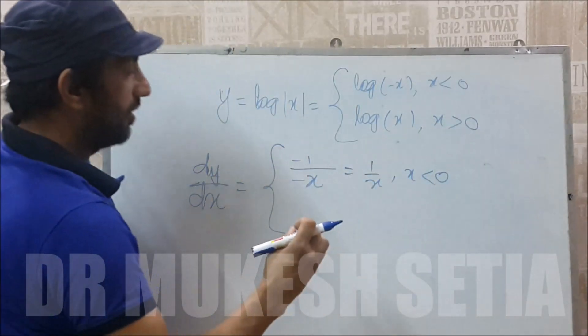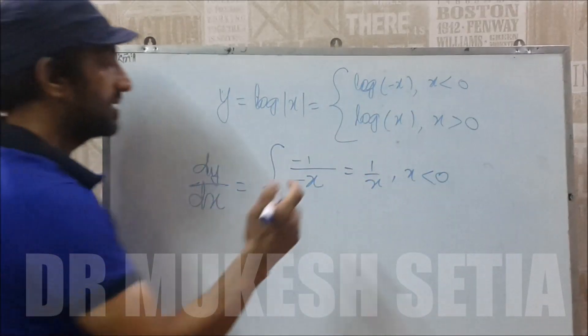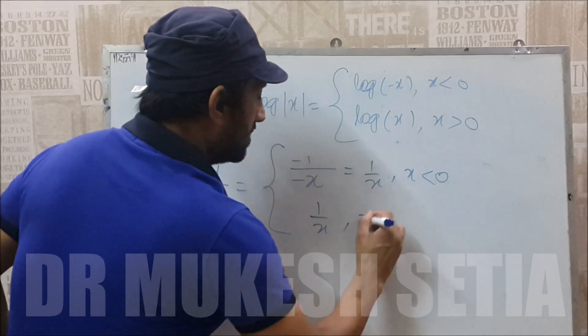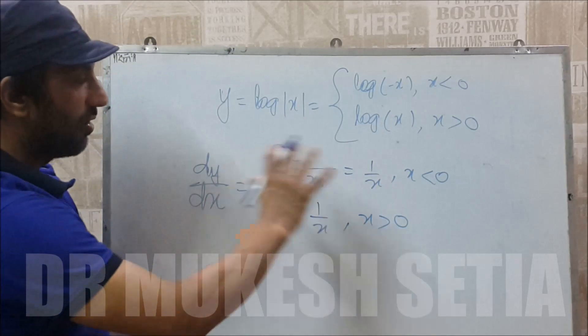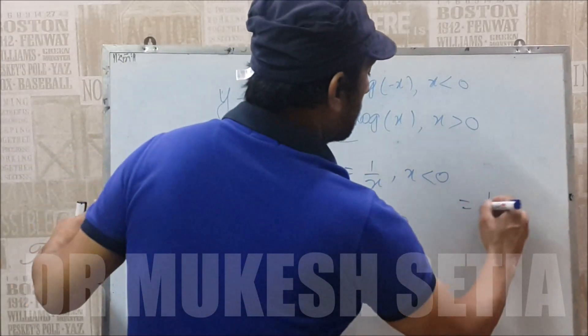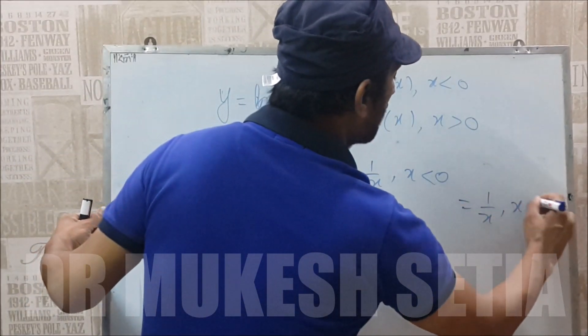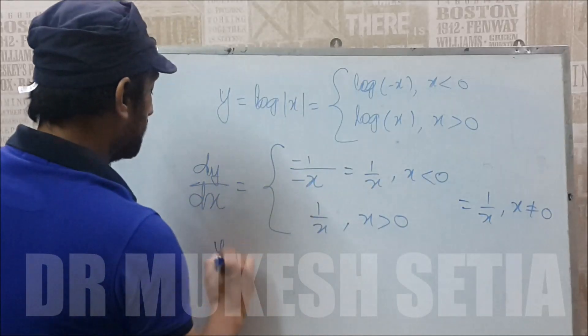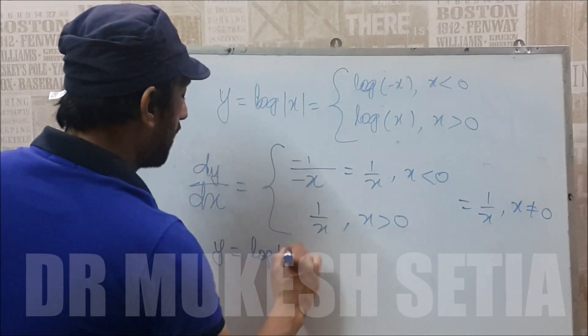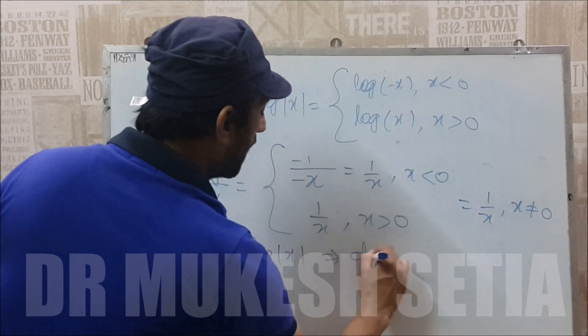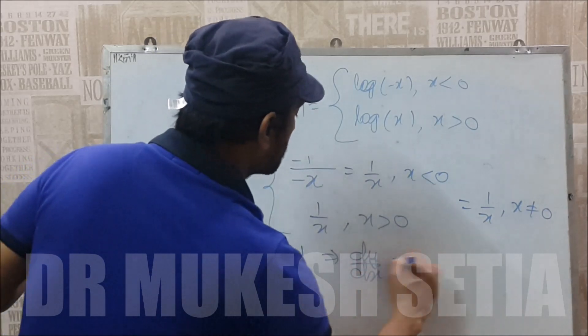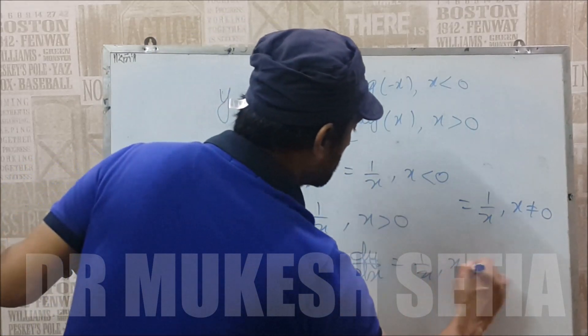Same way when x is a positive quantity, we again derive log x as 1 by x. So one could see that it is always 1 by x provided x is not equal to 0. So the derivative of log mod x is 1 by x when x is not equal to 0.